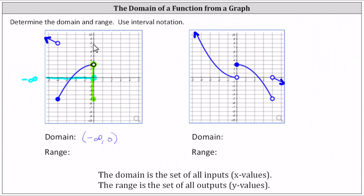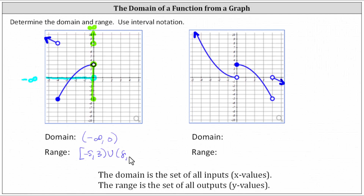Then the graph jumps up to where y equals eight, but because we only have an open point at y equals eight, eight is not in the range. From here, the graph continues upward and y approaches infinity. This indicates the range is the interval from negative five to three, closed on negative five, open on three, union the open interval from eight to infinity. The square bracket indicates negative five is in the interval, and the parenthesis indicates three is not in the interval.